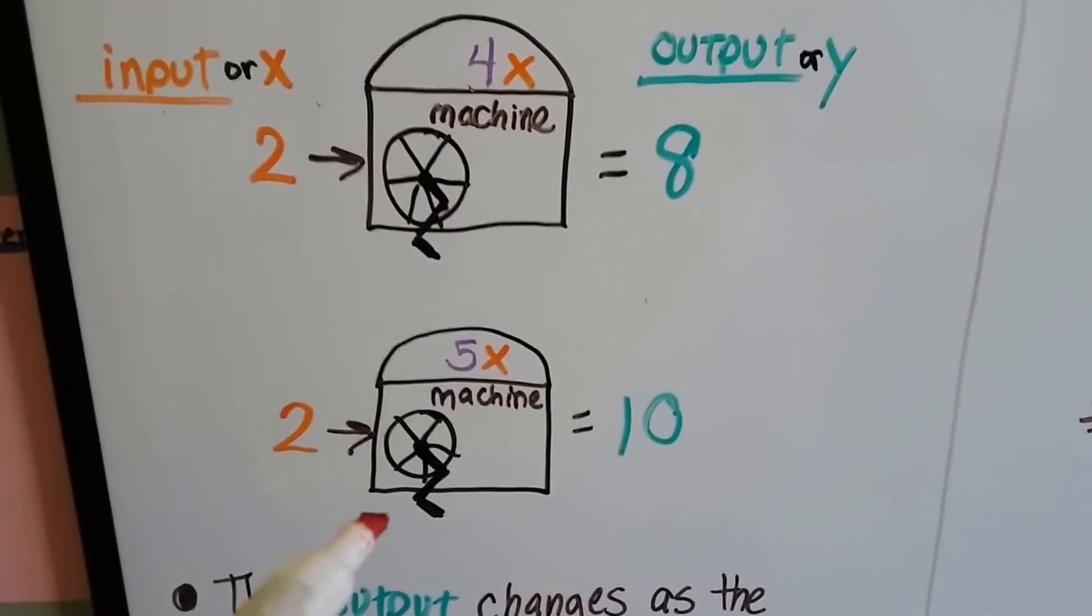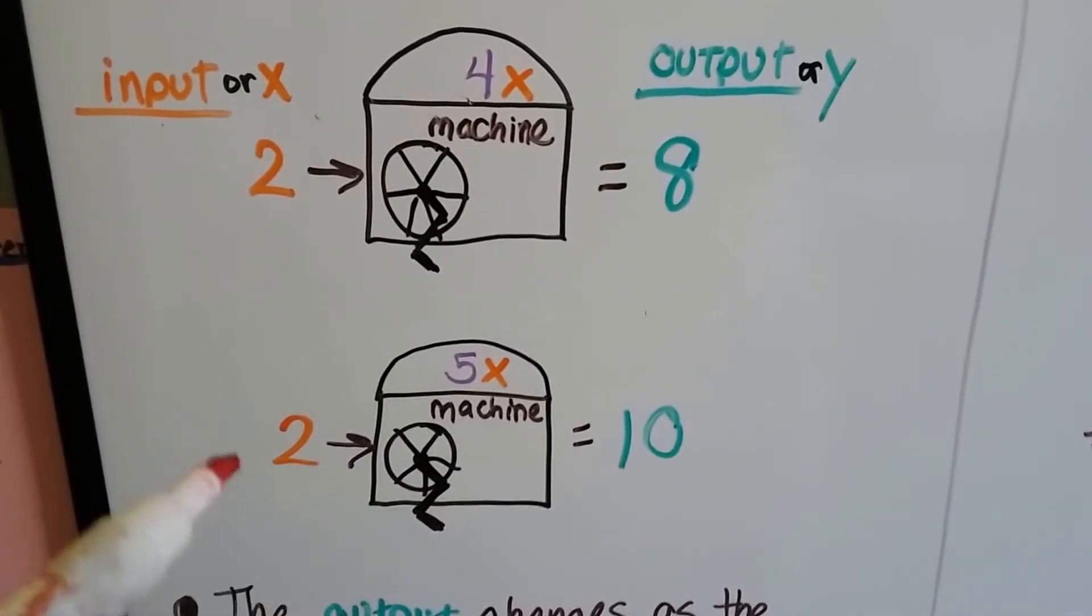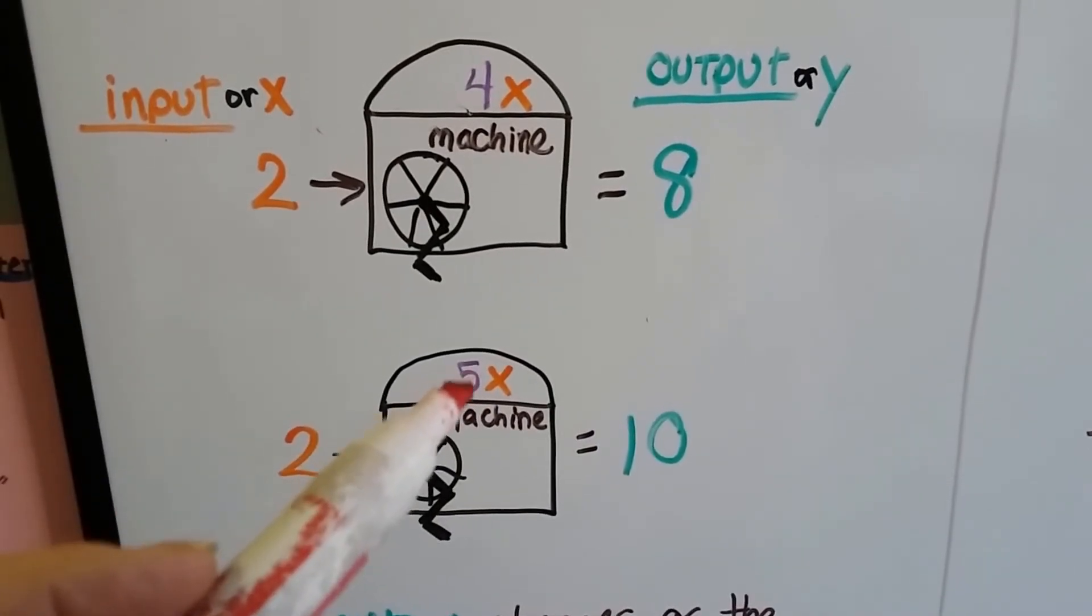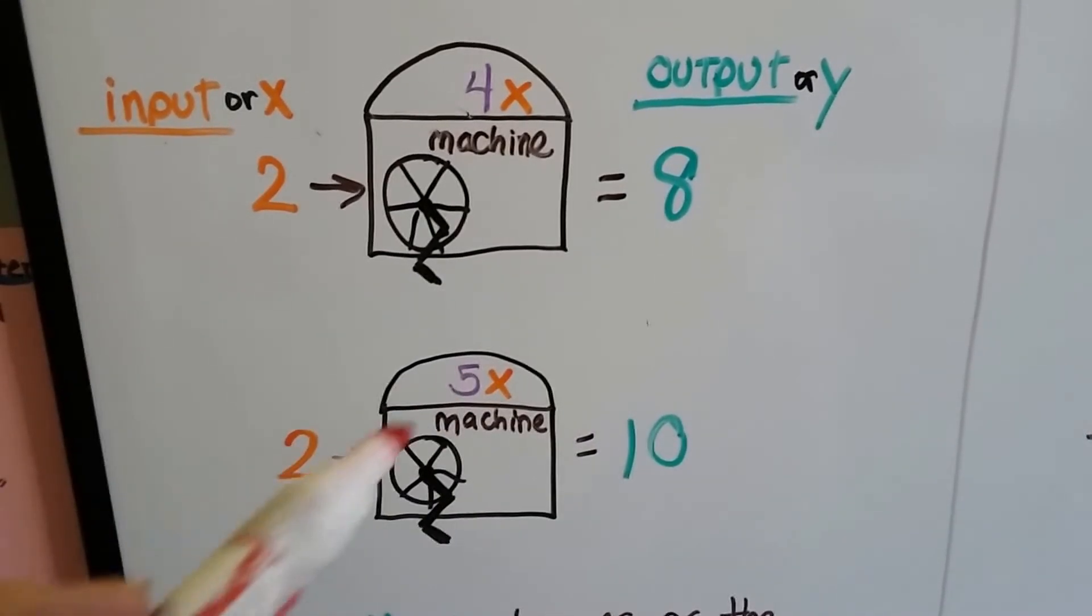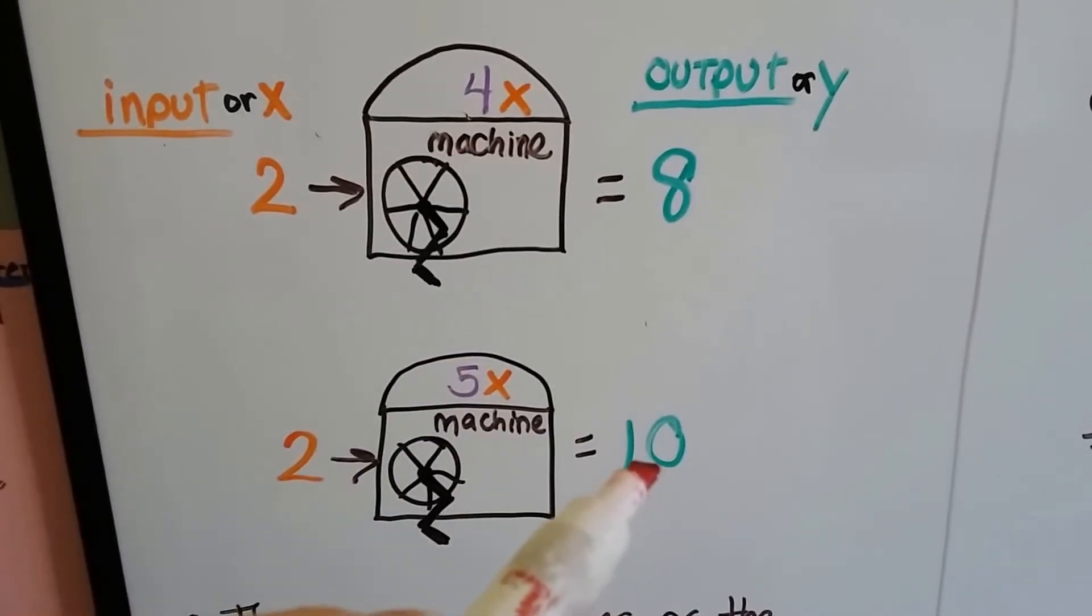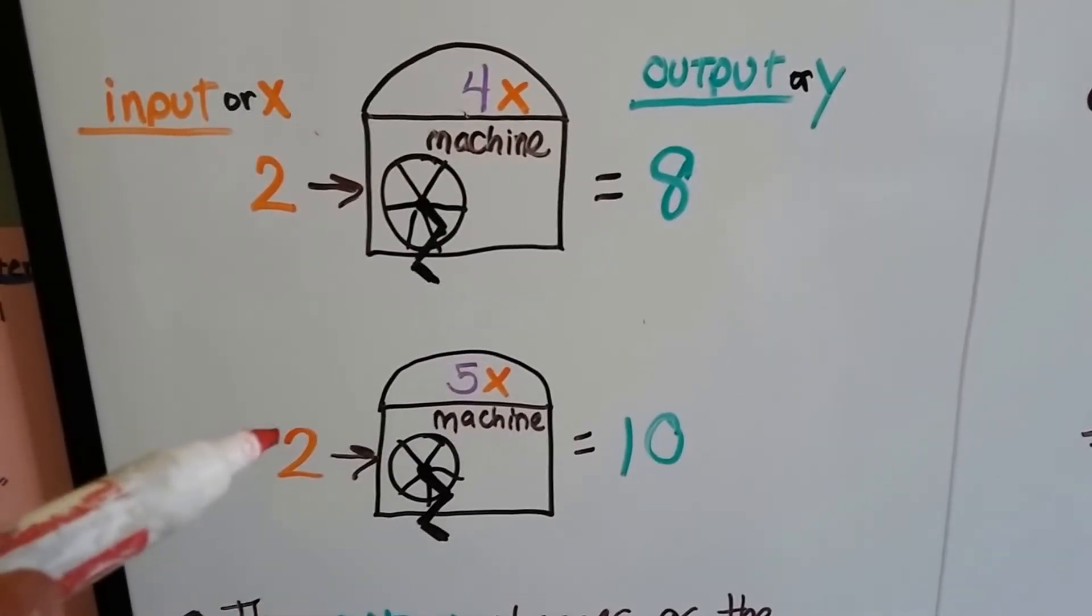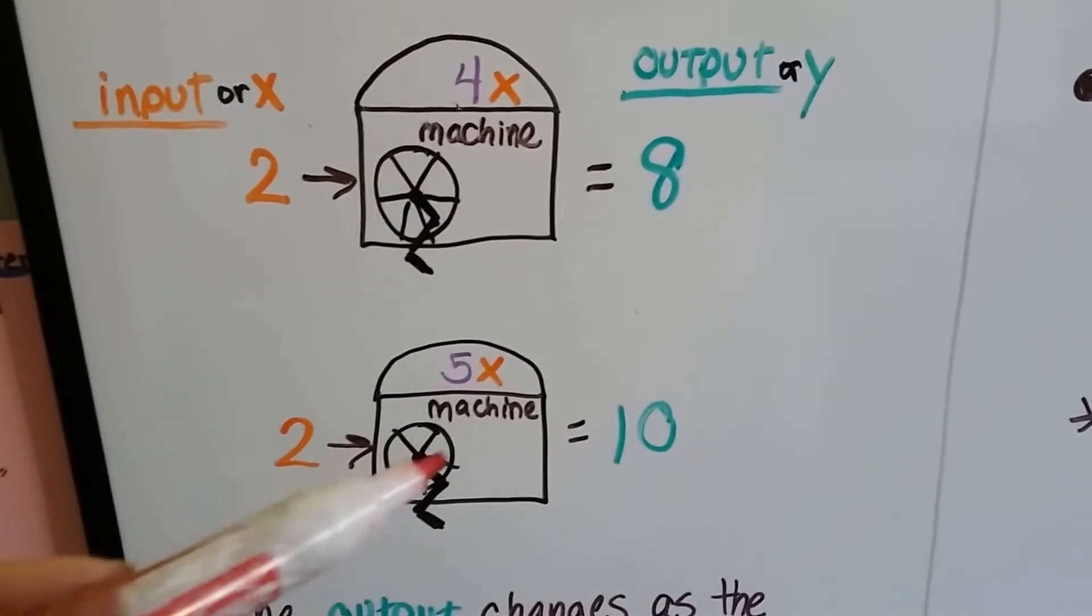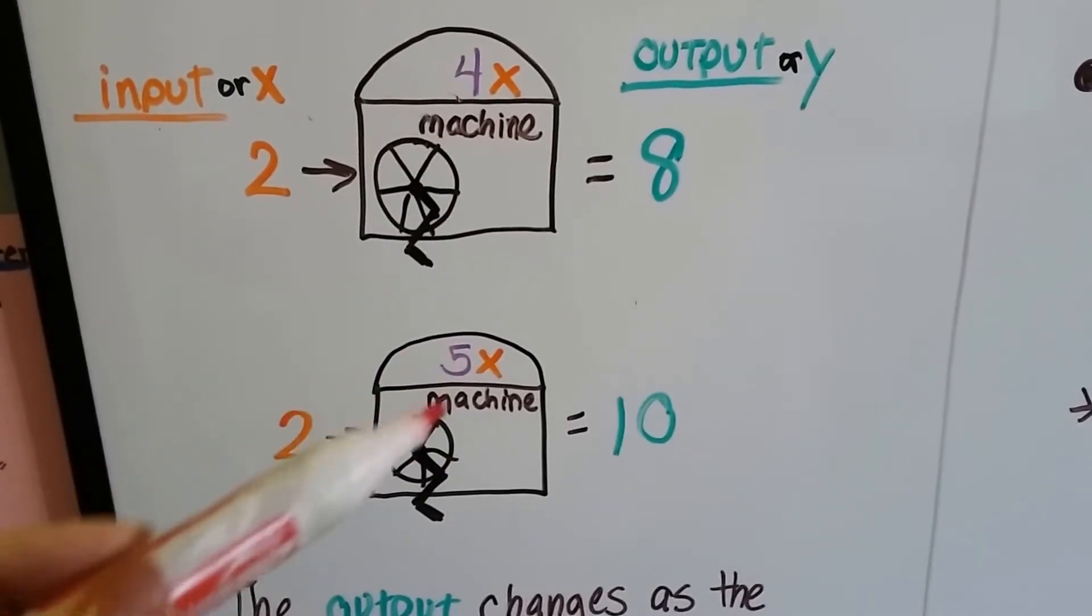Now look at this. This is the 5x function machine. Whatever the input is, is going to be multiplied to 5. So if x is a 2, the output is going to be a 10. If I put in a 3, the output would be a 15. Whatever goes into this machine is multiplied by 5.